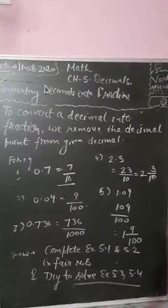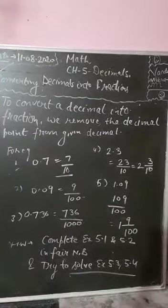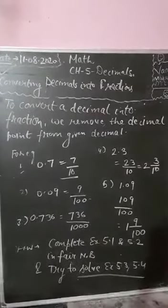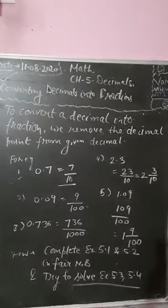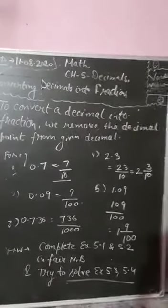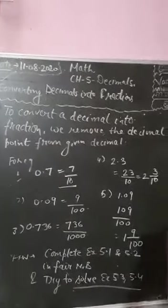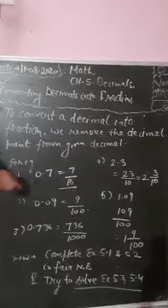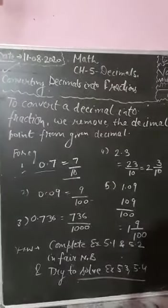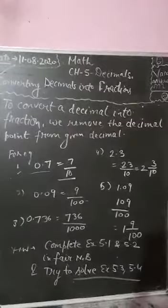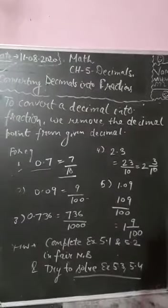Dear students, the next topic is converting decimals into fractions — the opposite of what we just did. To convert a decimal into a fraction, you have to remove the decimal point. It is understood that you need to remove the decimal point and write the decimal number as a fraction, which consists of a numerator as well as a denominator. For example, convert 0.7 into a fraction.